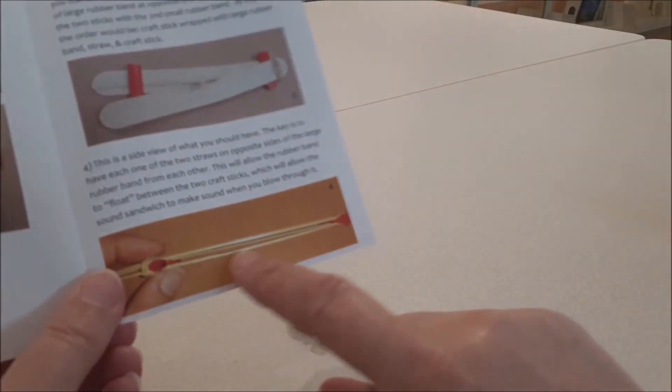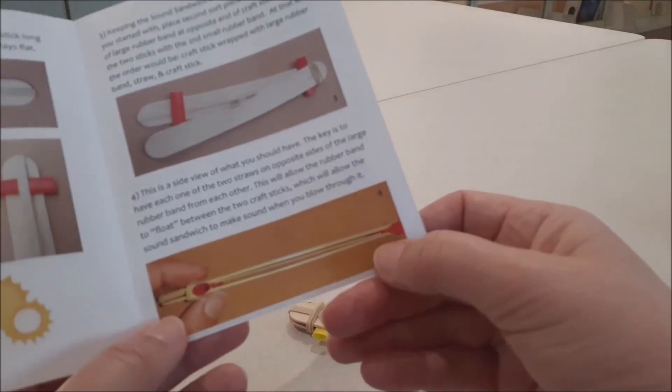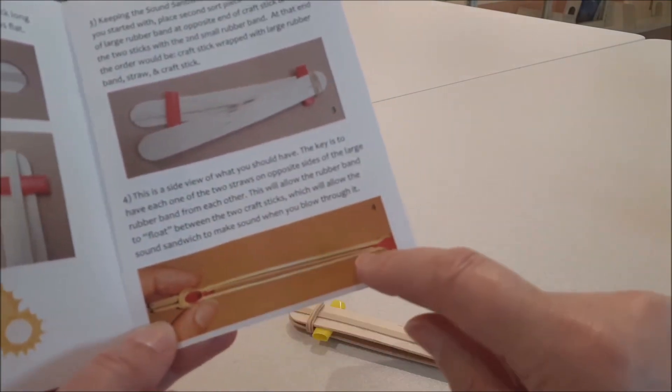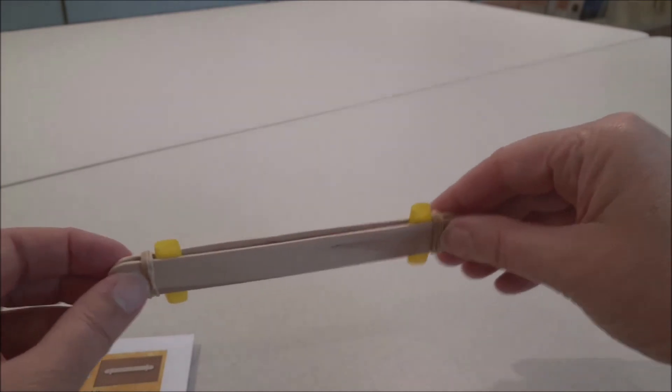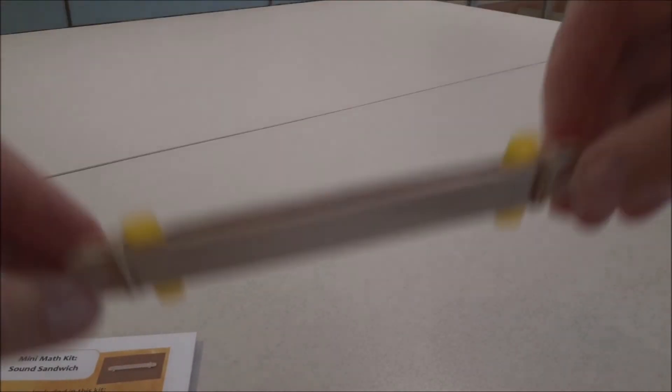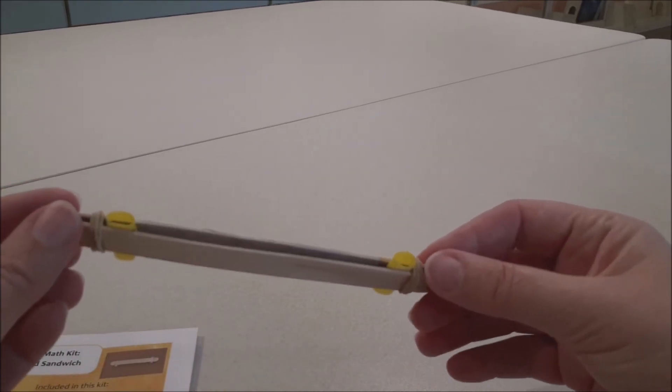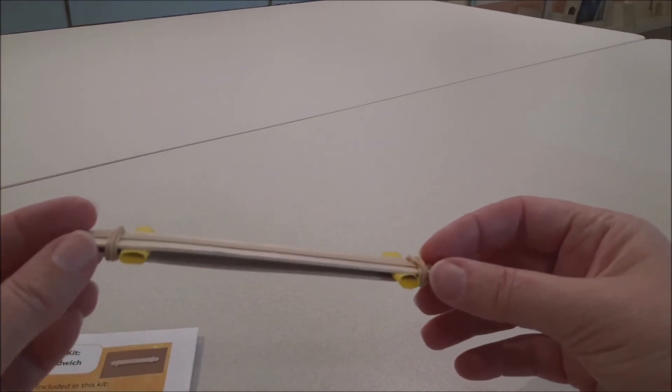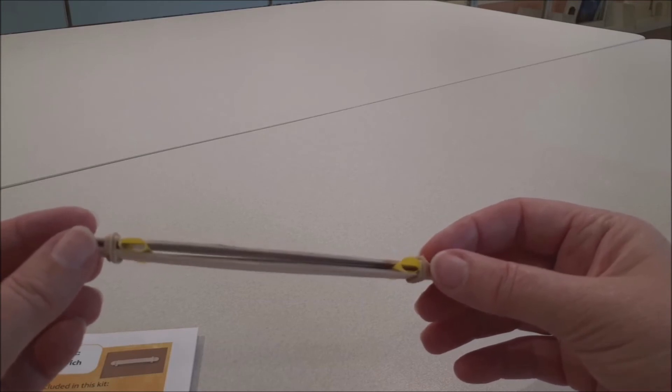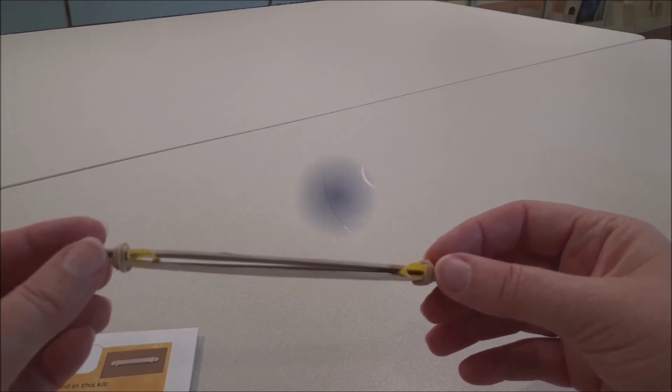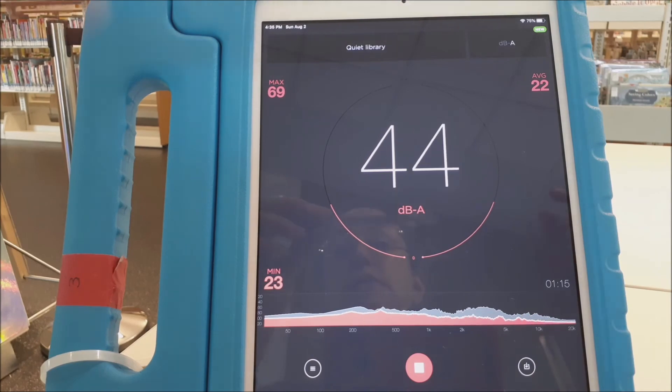So when you open up the booklet, there's a good picture right here of what I'm talking about. If you have it done correctly, it'll make a sound. If you don't have it done correctly, it won't make any sound at all. So then take it apart and redo it. It needs to float between the two craft sticks.